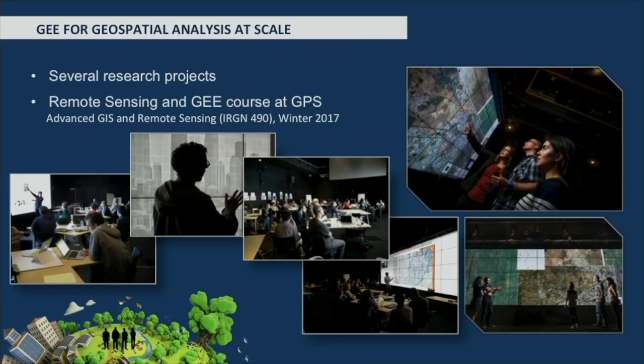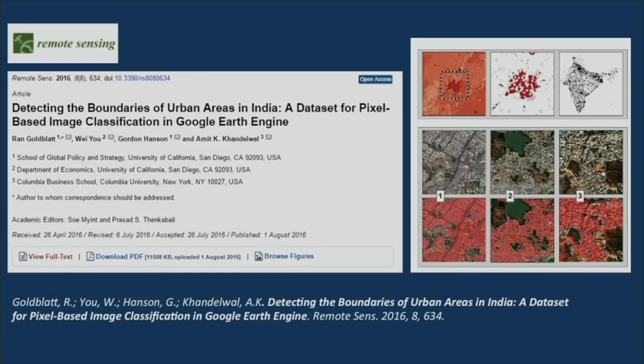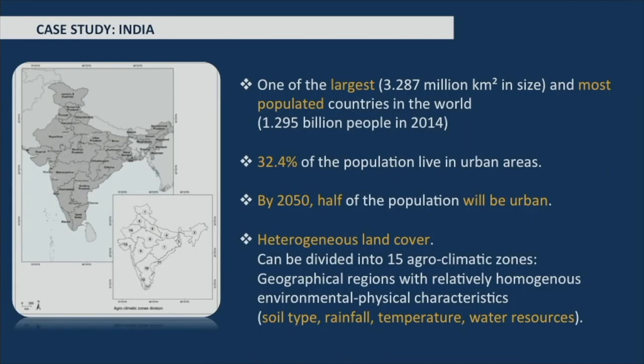We have been using Google Earth Engine for different projects and developed a remote sensing course emphasizing planetary scale analysis. Here I want to show one case study in which we used Earth Engine to detect the boundaries of urban areas in India. India is a very good case study because it is one of the largest and most populated countries in the world, with almost a third of its population urban — expected to reach almost half by 2050 — and it is characterized by heterogeneous land cover.